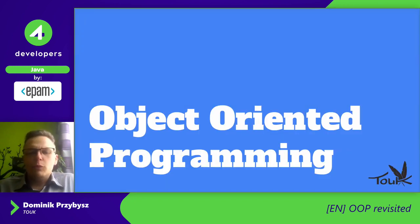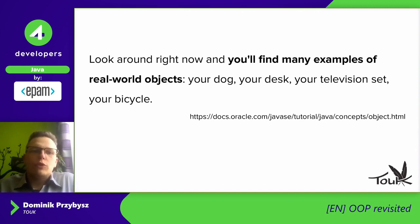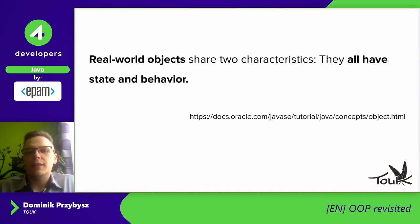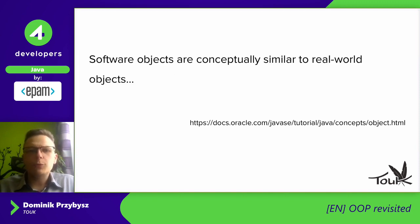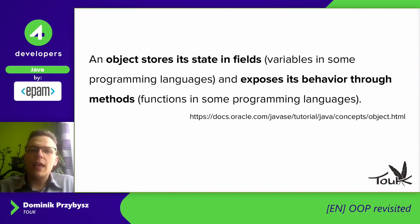Let's start with a quick definition. What is object-oriented programming? If you look at the Java tutorial on the Oracle website, you will find the history about real-world objects in our daily life — we have a dog, a desk, whatever. When you look at those objects, we can find that they share two characteristics: they have a state and they also have a behavior.